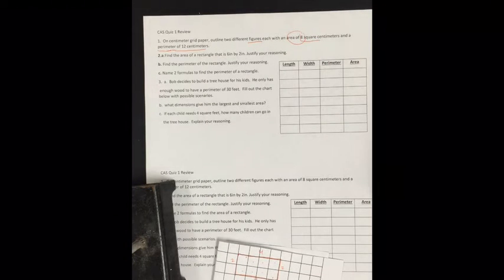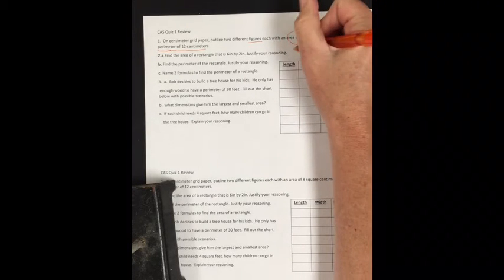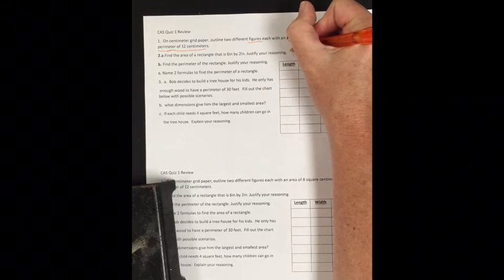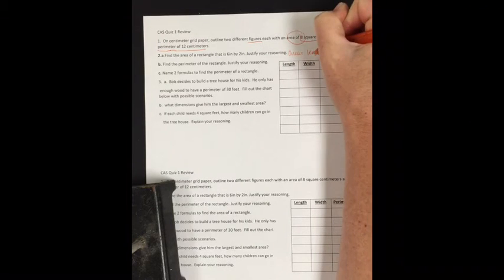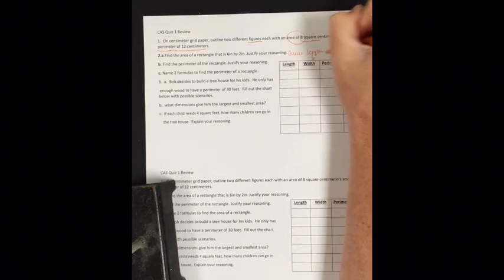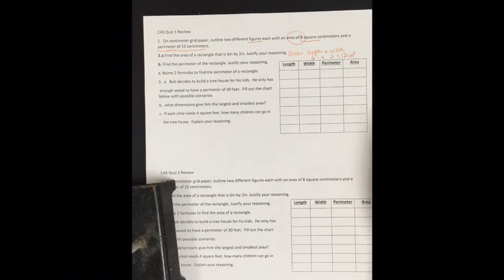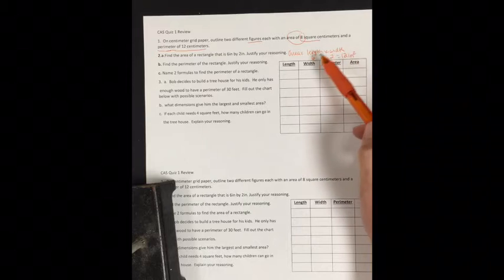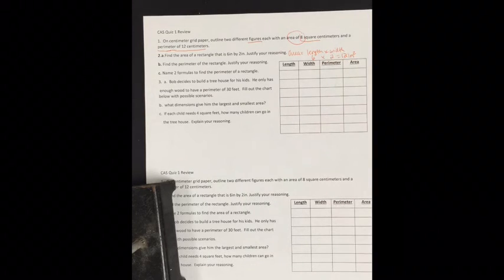Next, find the area of a rectangle that is 6 inch by 2 inch. Justify your reasoning. You would have to say that area equals length times width. The area is 6 and the width is 2, which gives you 12. Area is always squared. To justify your reason, say area equals length times width: 6 times 2 equals 12 inches squared.